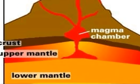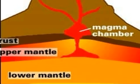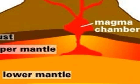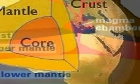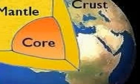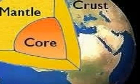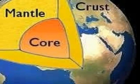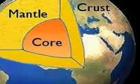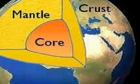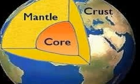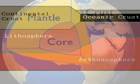We can catch a glimpse of what lies beneath the surface through landforms such as volcanoes. Let us first look at the three main layers of the Earth's interior. These layers are the crust, mantle, and core. Within each layer, there are two sub-layers.